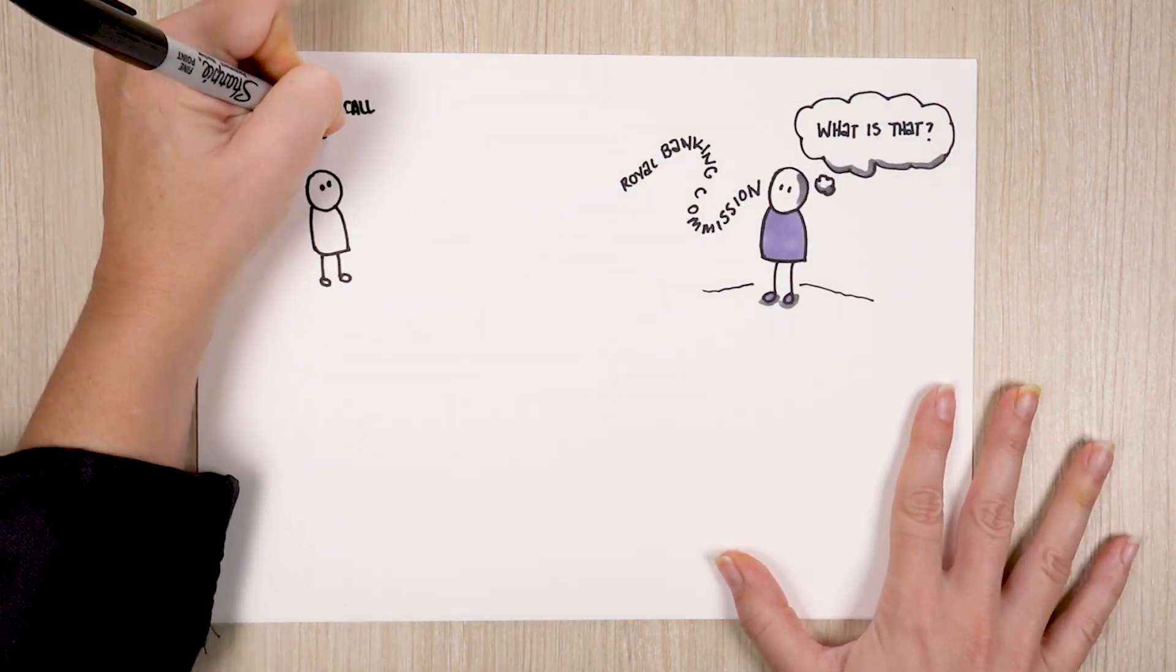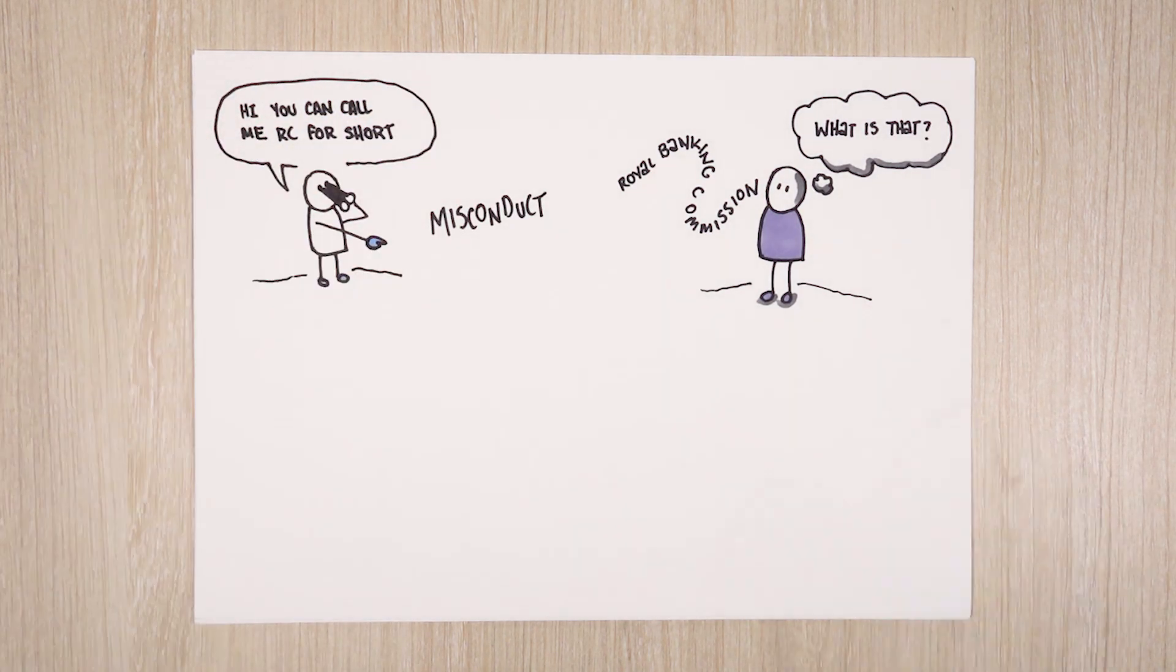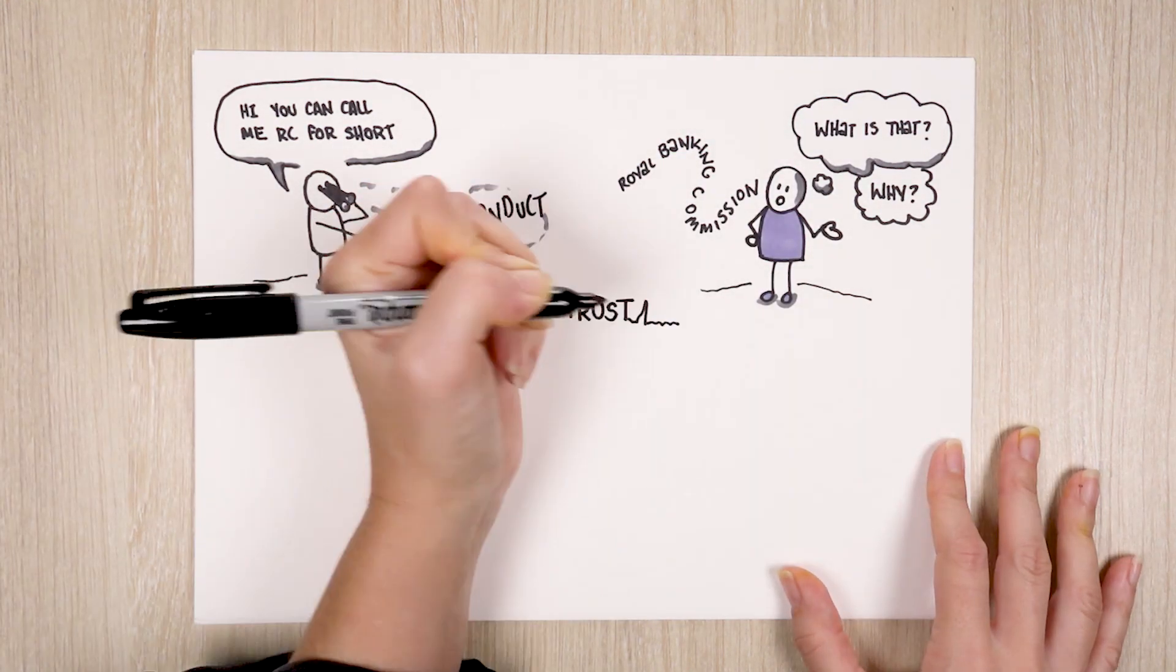The Royal Commission, or let's call it the RC, is looking into misconduct in the banking, superannuation and insurance industries. Why is it taking place? In two words, public trust.